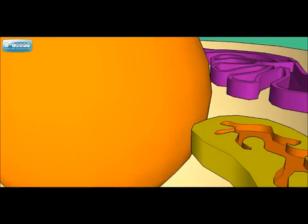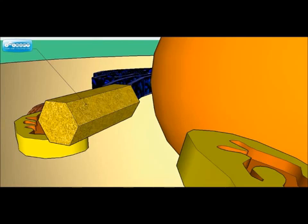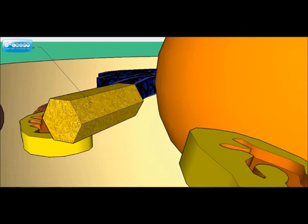The centrosome is the organelle that is responsible for the formation of microtubules. Microtubules provide physical support for the cell and help to give the cell its shape. Microtubules also play a crucial role in cell division or mitosis.